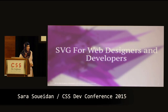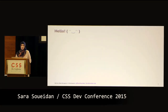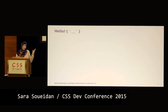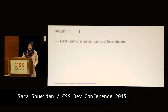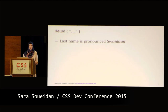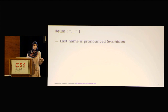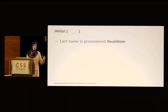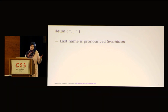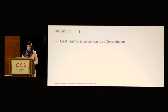Thank you for having me. My last name is pronounced Soueidan — all the vowel letters, S-O-U-E-I-D-A-N. That spelling is more German and French than it is English. So this is how you pronounce it: Soueidan.